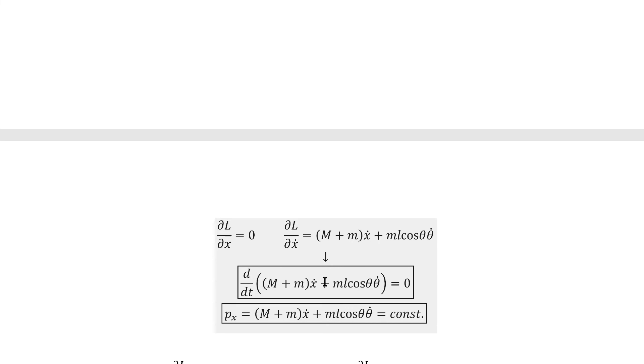Calculating the equations of motion is straightforward. We take the usual partial derivatives of the Lagrangian and then insert those values into the Euler-Lagrange equations. And we see we do, in fact, have a conserved quantity coming out of the fact that the Lagrangian doesn't depend on x.